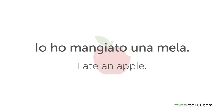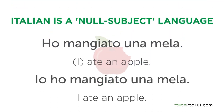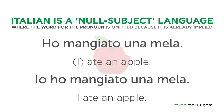More often than not, if you wanted to say 'I ate an apple' in Italian, you would not say 'Io ho mangiato una mela.' Instead, you would more likely say 'Ho mangiato una mela.' This is because Italian is a null subject language where the pronoun is omitted because it's already implied — all of the information can be derived from the way the verb is conjugated in the sentence.